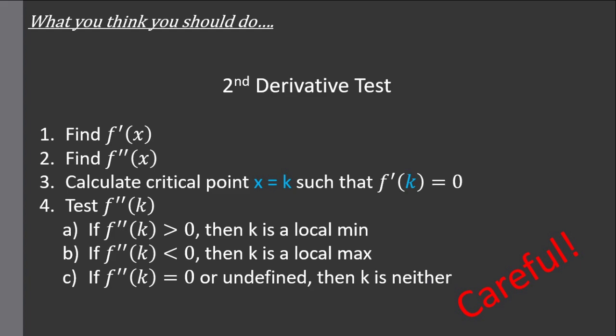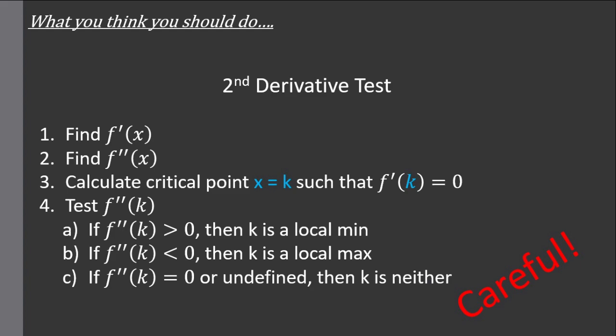There are cases where the second derivative test works. Take for example f(x) equals x squared. You can calculate the first and second derivatives, find the critical point at x equal to zero, then see that the second derivative is always two, which is greater than zero, so you know this critical point concaves up and is a local min. And if you look at the graph, yes, this makes sense.